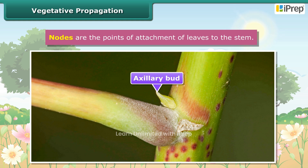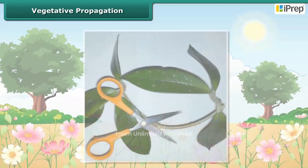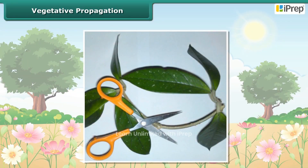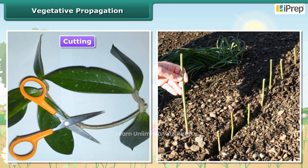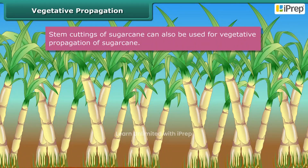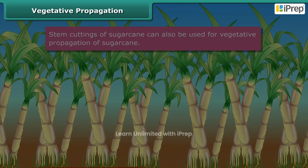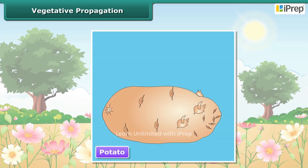In some plants like rose, small portions of the stem containing small nodes are cut from the plant. These cut portions are called cuttings. If planted and watered, they can produce new rose plants. Similarly, stem cuttings of sugarcane can also be used for vegetative propagation of sugarcane.